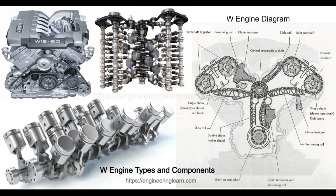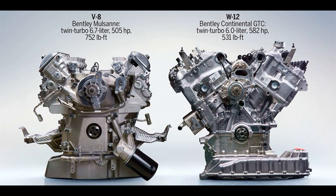The internal combustion engine is also classified on the following bases. 1. Speed: low-speed engine, medium-speed engine, and high-speed engine. 2. Method of fuel injection: carburetor engine, air-injection engine, and air-less or solid injection engine. 3. Method of governing: hit-and-miss governed engine, in which the governor controls engine speed by cutting off ignition and fuel supply at very high speed; qualitatively governed engine; and quantitatively governed engine.